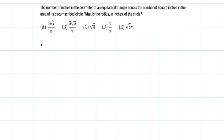The number of inches in the perimeter of an equilateral triangle equals the number of square inches in the area of its circumscribed circle. What is the radius in inches of the circle?